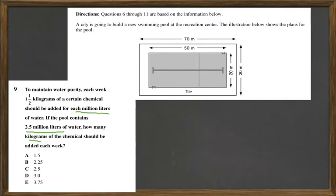Let's say for 1 million, you would have 1.5 kilograms. And then if I had 2 million, I'd have double 1.5, which is 3 kilograms.